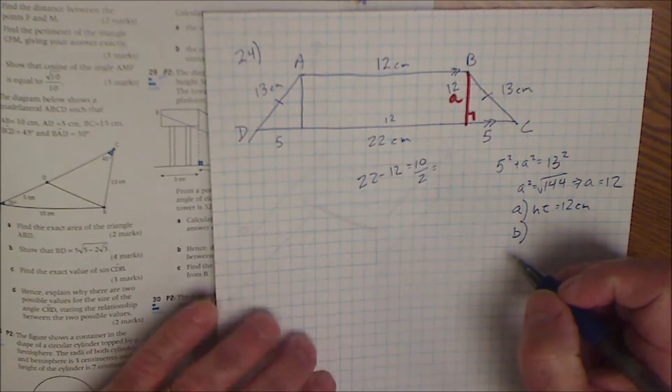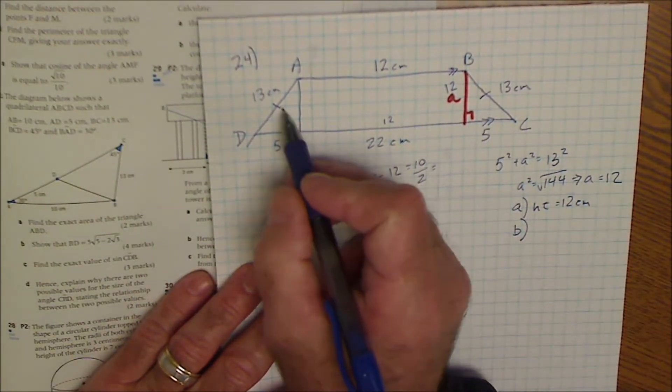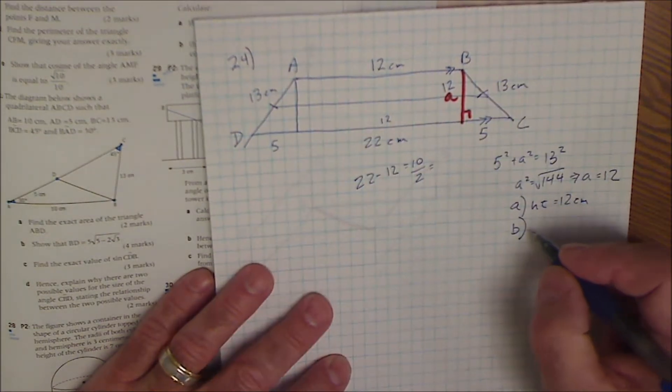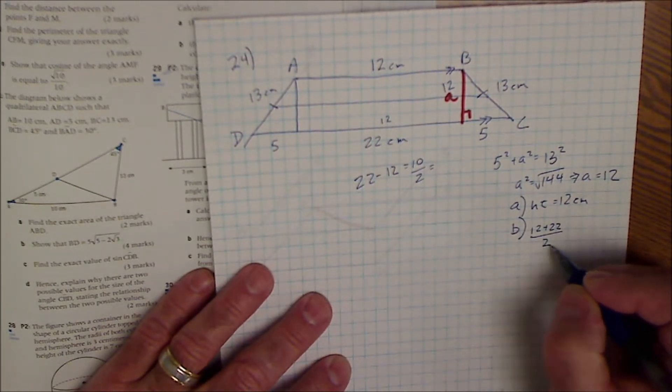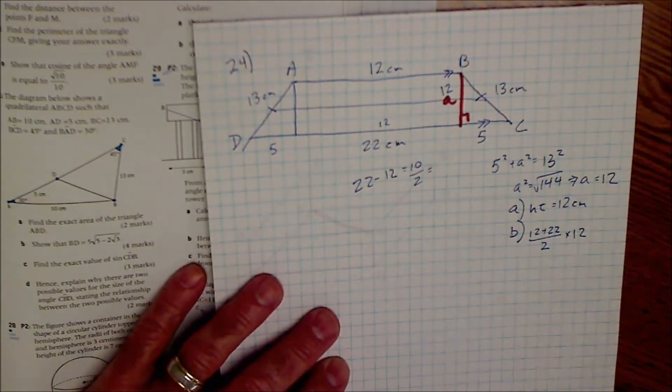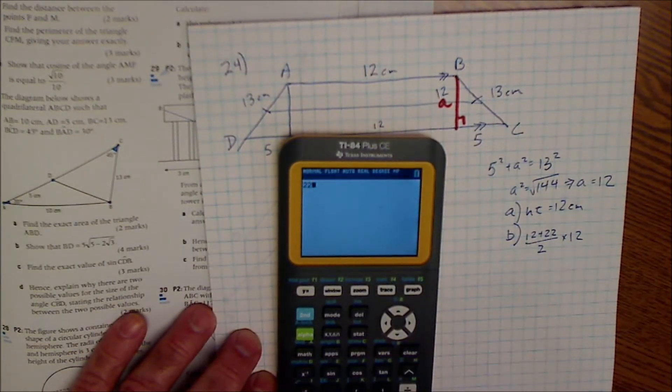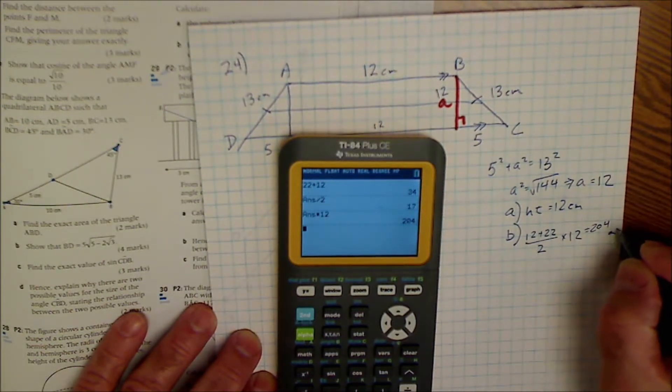Part B is find the area of the trapezium. Area of a trapezoid is the median times the height. So the median is base 1 plus base 2 divided by 2 times the height of 12. So I have 17 times 12, 22 plus 12 divided by 2. 17 times 12 centimeters is 204 square centimeters.